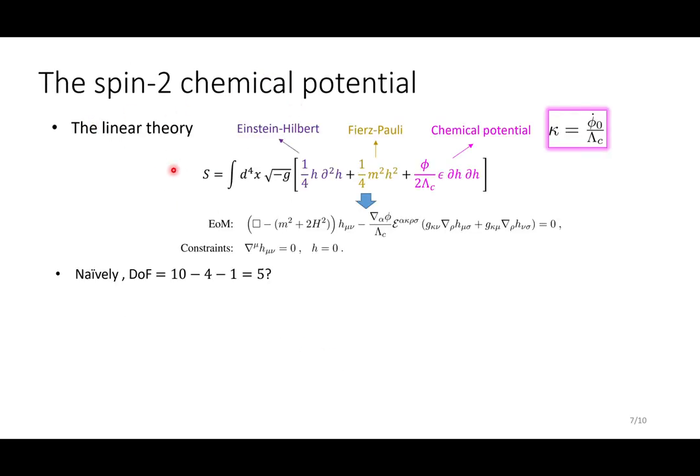Now let's study the linear theory of this model. So to the linear level, we add the kinetic term, which corresponds to the Einstein-Hilbert term action. And the mass term is given by the Fierz-Pauli mass. And upon this free theory, we couple it to the inflaton background via this chemical potential term introduced in the previous slide.